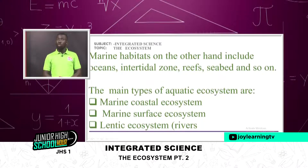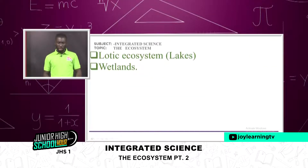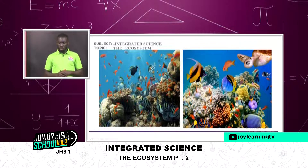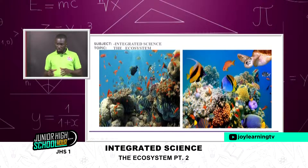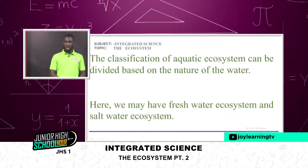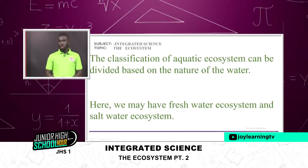Marine habitats include oceans, the tidal zone, reefs, and seabed. The main types of aquatic ecosystem include marine coastal, marine surface, lentic, lotic, and wetland ecosystems. We have two pictures here showing different colors of plants and species of fish — yellowish, gray, green, and purple-colored fish of different varieties in the aquatic ecosystem. The classification can be divided based on the nature of the water: freshwater ecosystems and saltwater ecosystems.